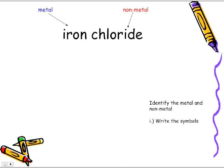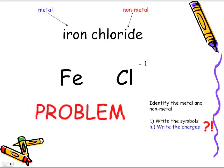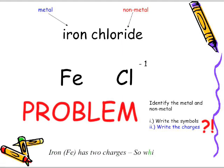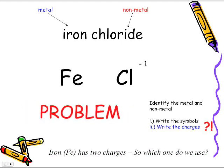First step, we're going to write the symbols: Fe, Cl. Step number two, we're going to write the charges. Cl is negative one. But we come across a problem — Fe, if you look at the periodic table, has two charges. So which one do we use? And that's where the whole focus of today's lesson is going to stem from.